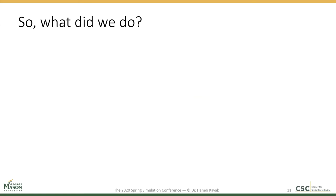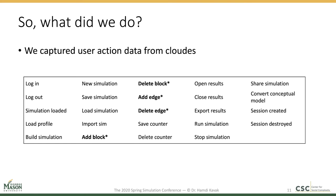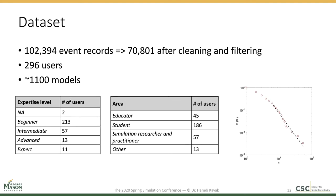So what did we do with CLOUDs? With user consent, we captured many user actions from CLOUDs. You see a list of actions here. Actions that are bold with an asterisk are more detailed — for instance, the action of adding a block holds additional information on which block was added, and delete block records which block was deleted. By collecting these action data, we constructed a dataset recording around one to two thousand events over approximately a year, back around 2015, in the early years of CLOUDs.